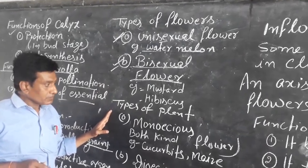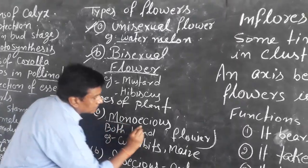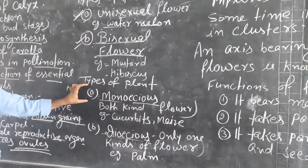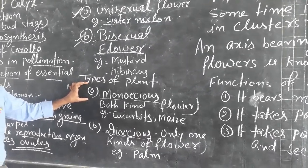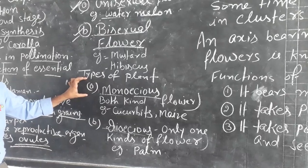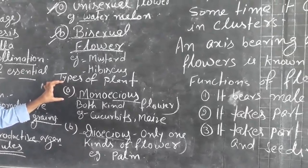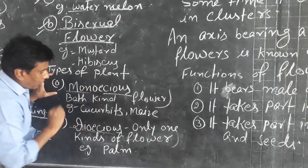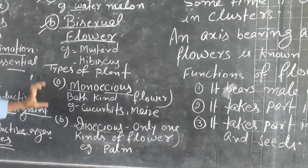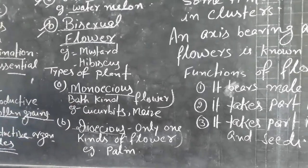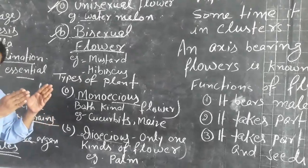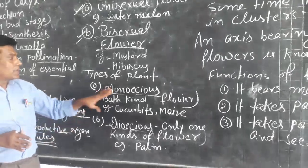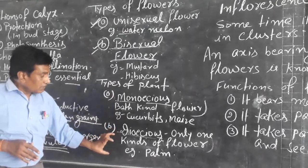On the basis of flowers, there are two types of plants. One is monoecious plant and the second is dioecious plant. If a plant produces both kinds of flowers — both male flowers and female flowers — they are called monoecious plants. For example, maize produces both male and female flowers, so it is a monoecious plant.